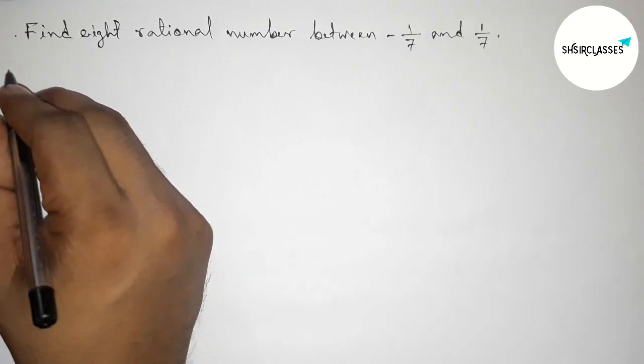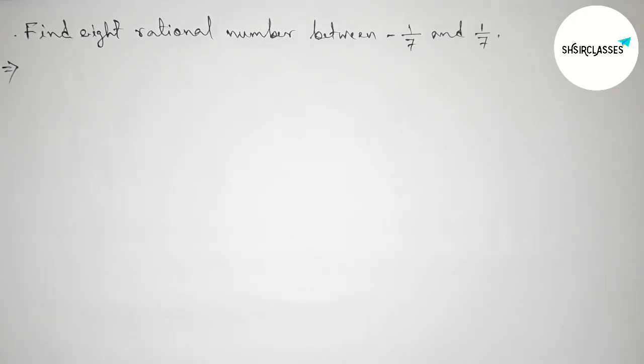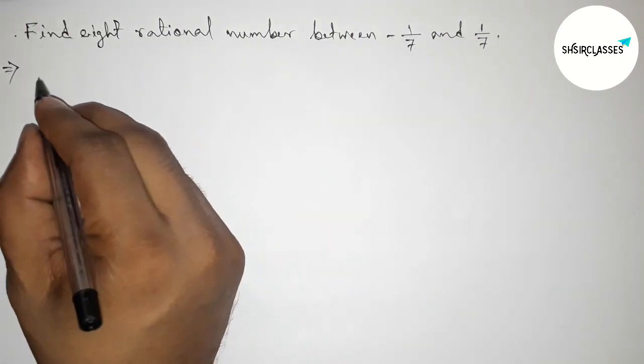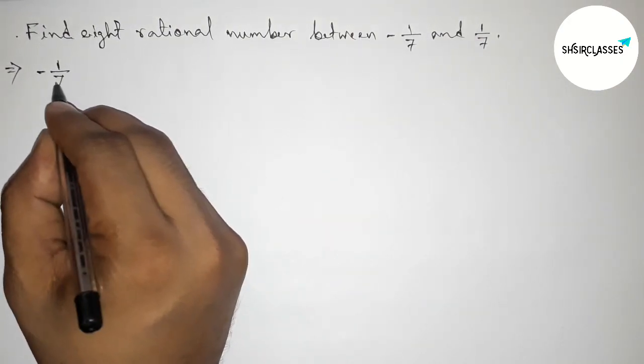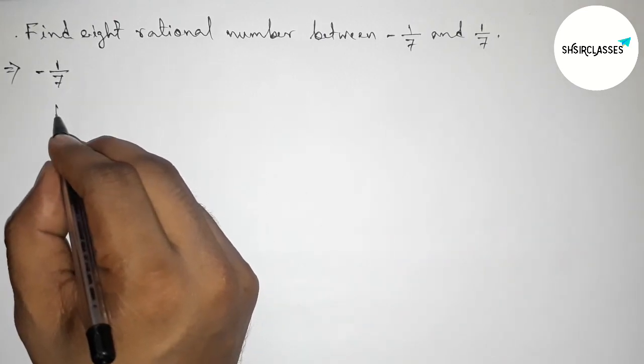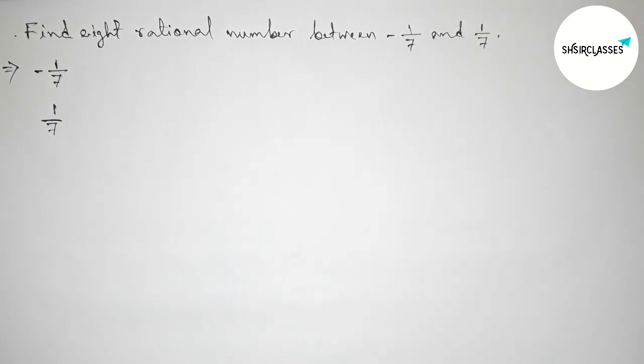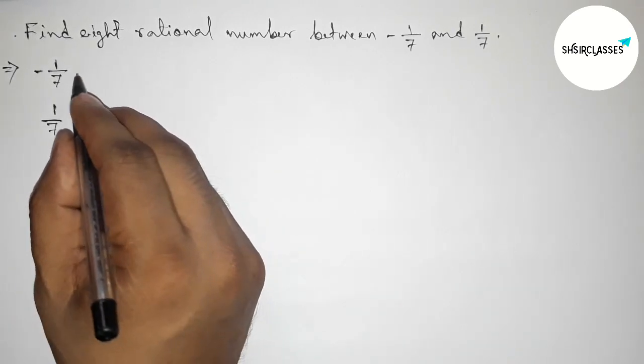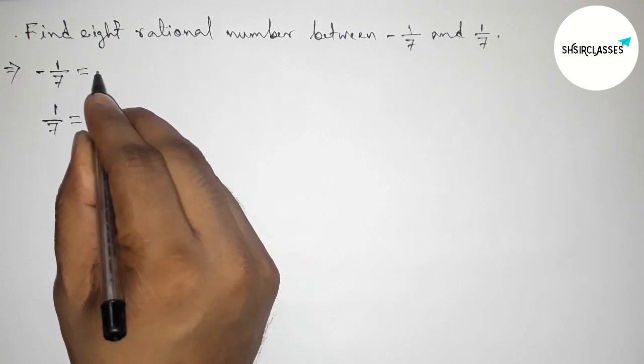start the video. First of all, let us solve this. Here, the given first rational number is -1/7 and the second one is 1/7. So here both the denominators are the same. Now doing some important calculation